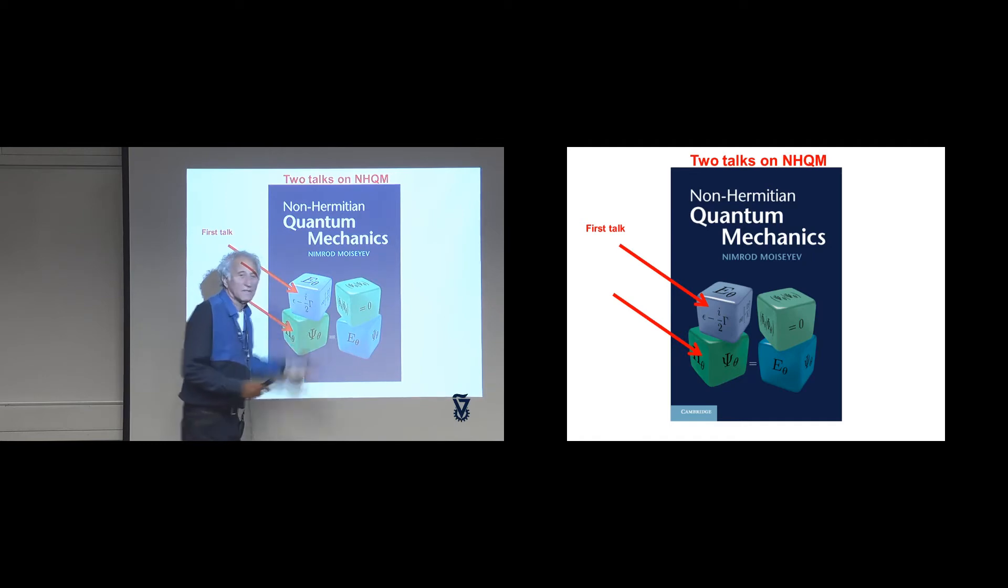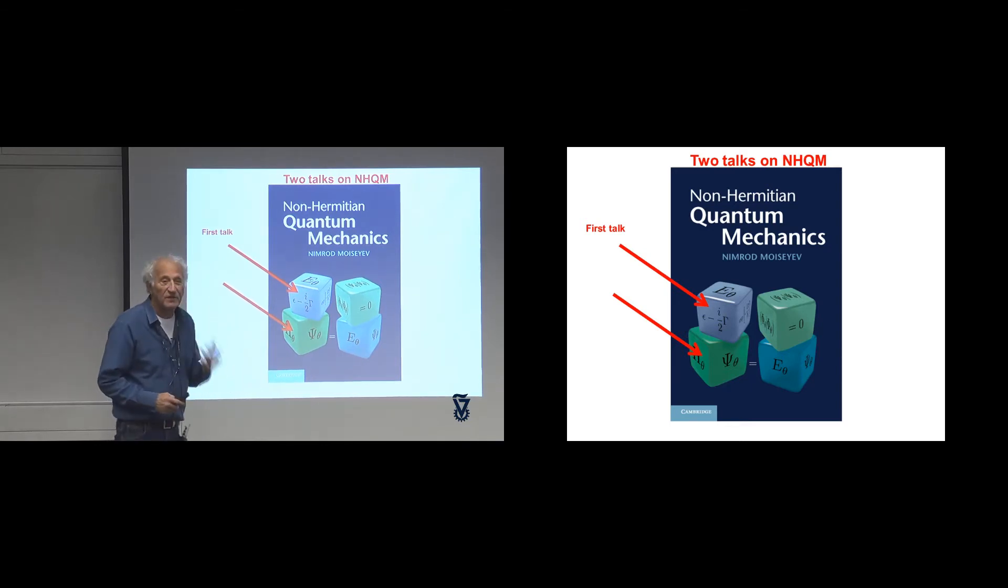Now, we know from standard quantum mechanics that the eigenvalues of the Hamiltonian, since the Hamiltonian is Hermitian, they are real. We prove it. And now I'm saying it's complex, so how come?